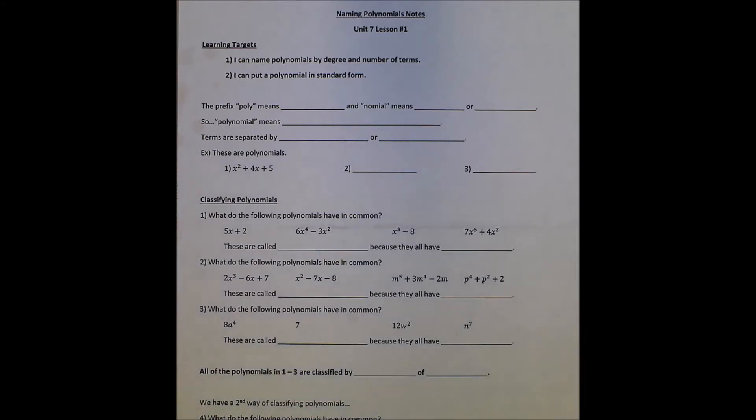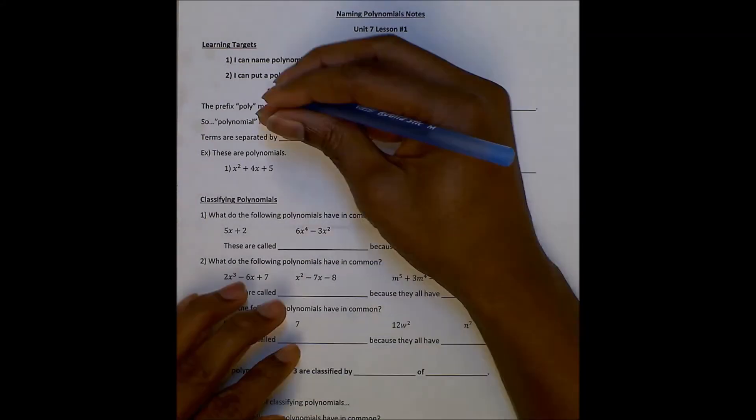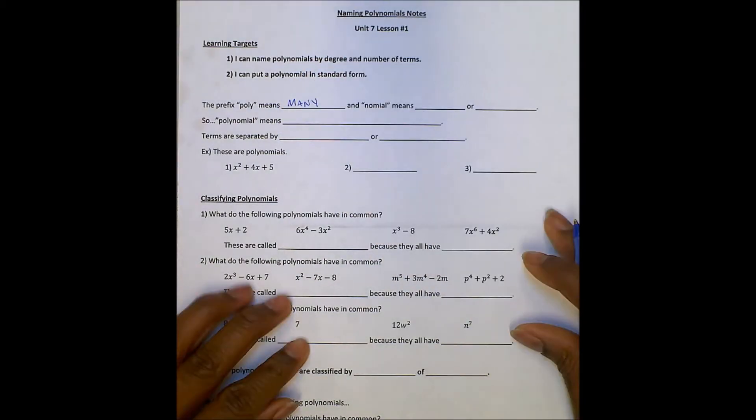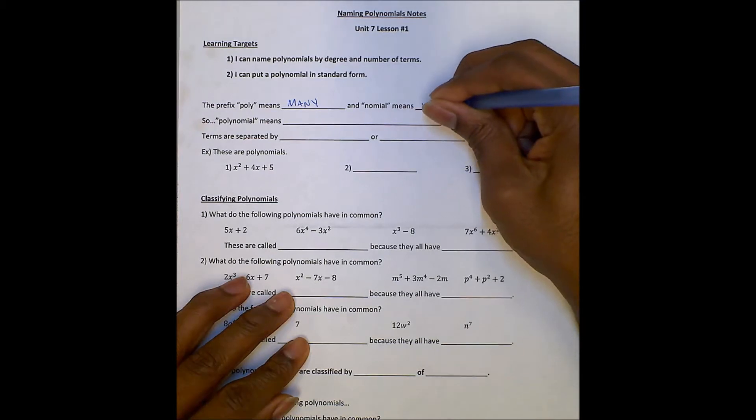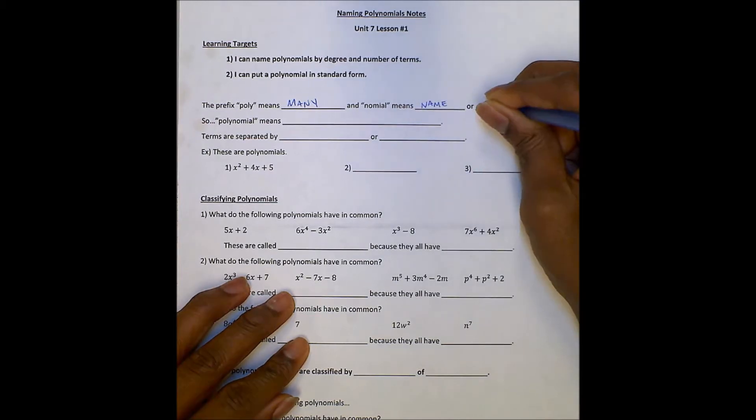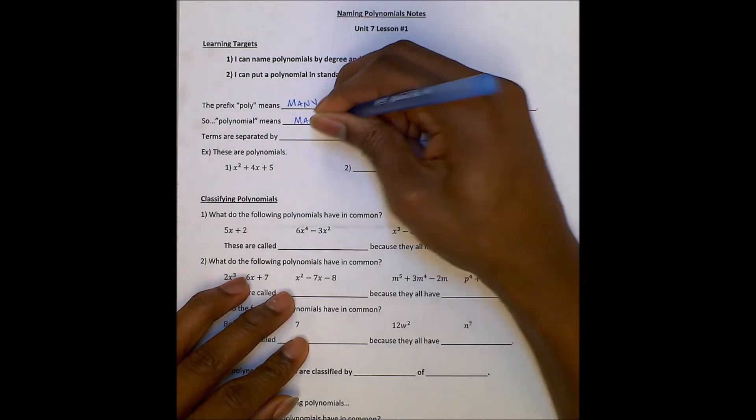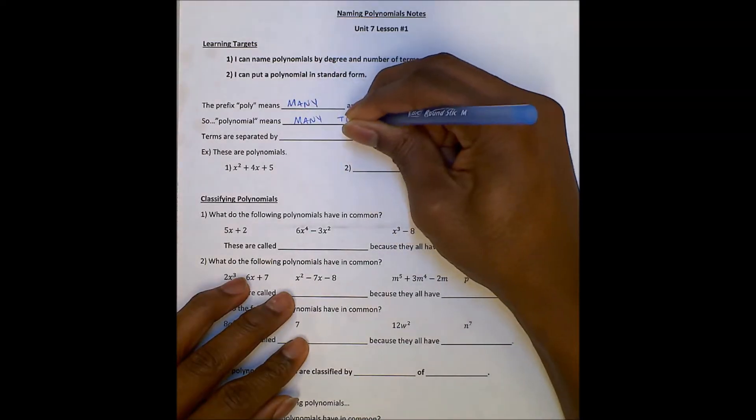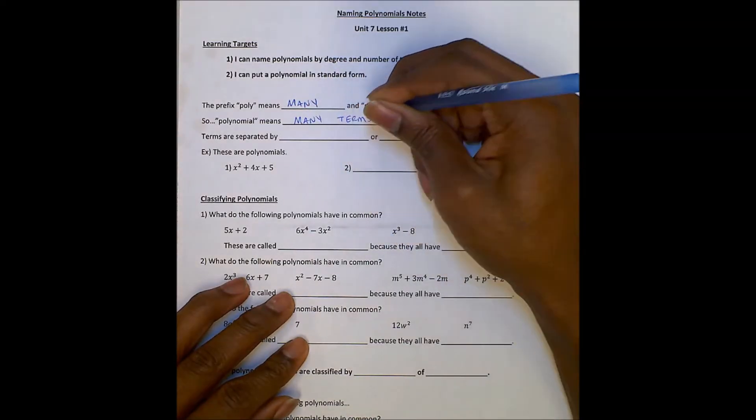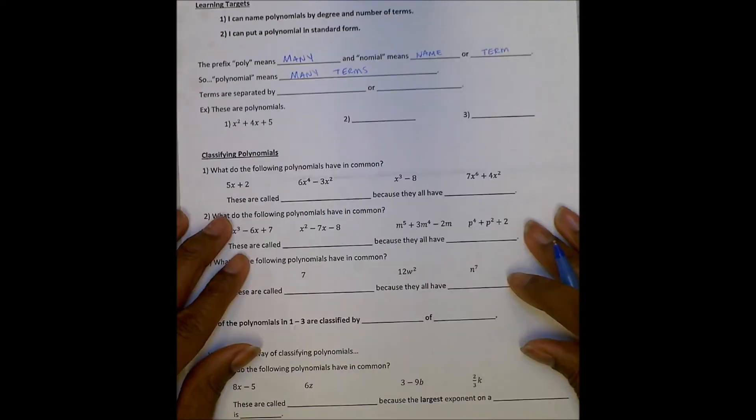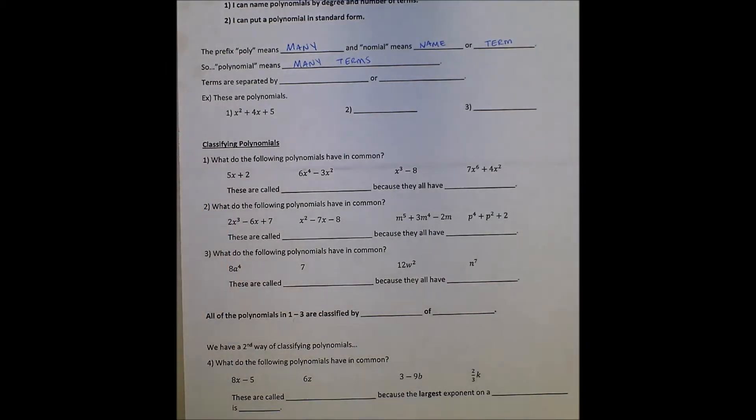The prefix poly means many, and nomial means name or terms. So polynomial means many terms. That's what we're going to be dealing with - a lot of different polynomials, and we can tell what a polynomial is.